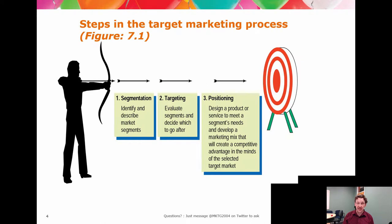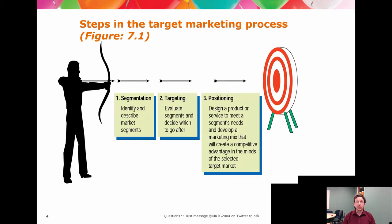Then, and only then, do you go and say: how do we get this market? We use positioning as the framing to set up the product, the communication, the distribution, and the price, so that we are going to offer something the market wants to the market that's most responsive.